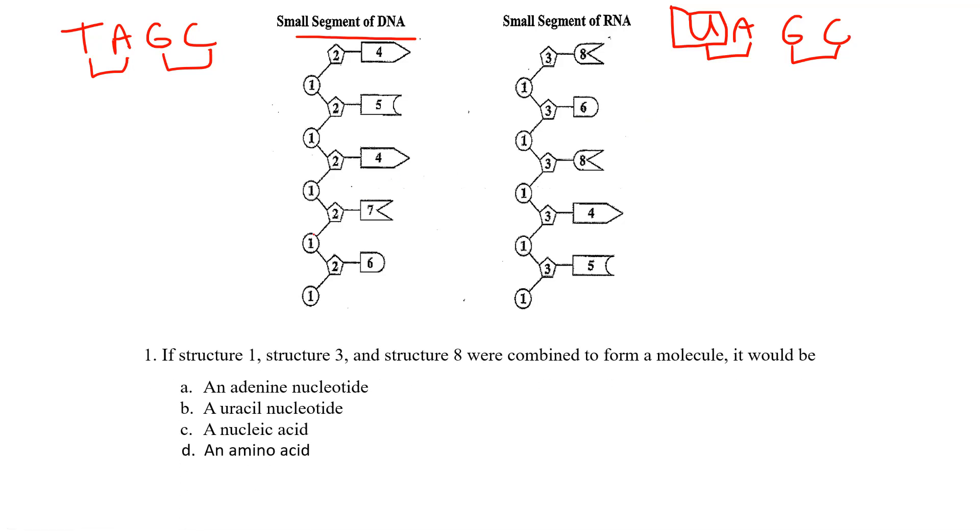Okay, so let's take a look at what the question is asking. It says if structure one - so structure one here on both of these is the sugar, okay, the five carbon sugar. And structure number three - actually I got that wrong - so number three is the sugar, number one in both of these is the phosphate backbone. So we know that the backbone of both DNA and RNA is going to have a sugar phosphate backbone, and then we have some base pairs here.